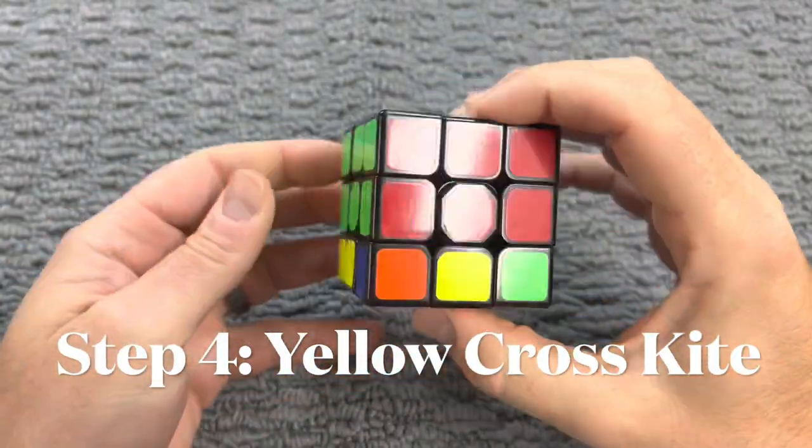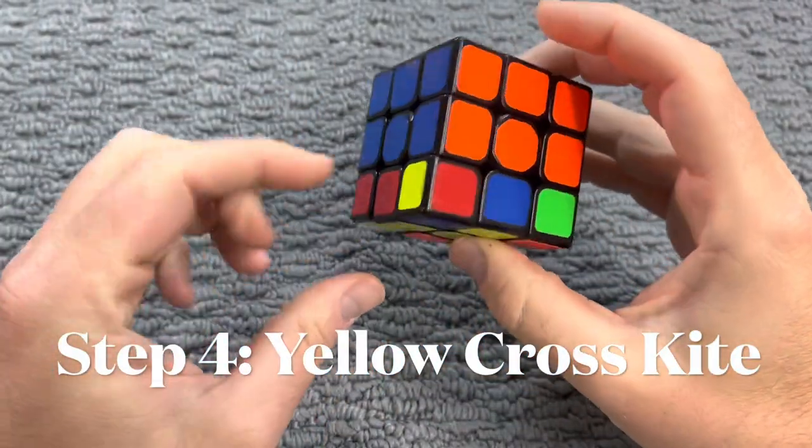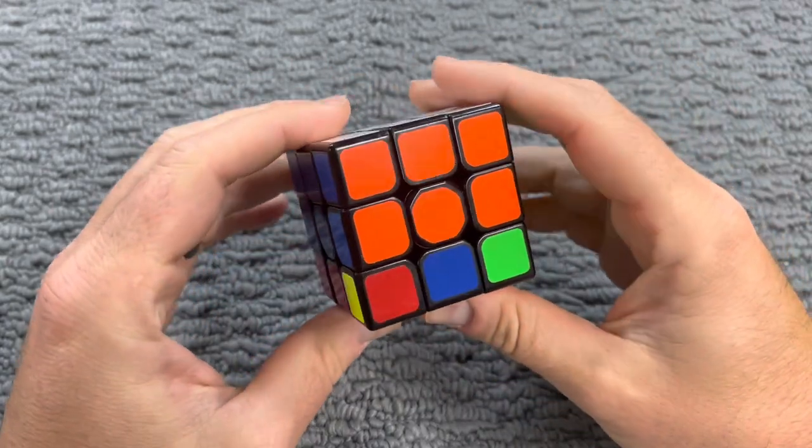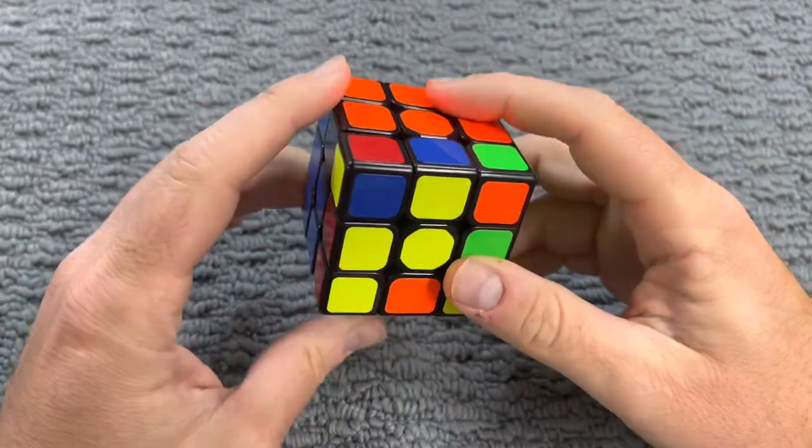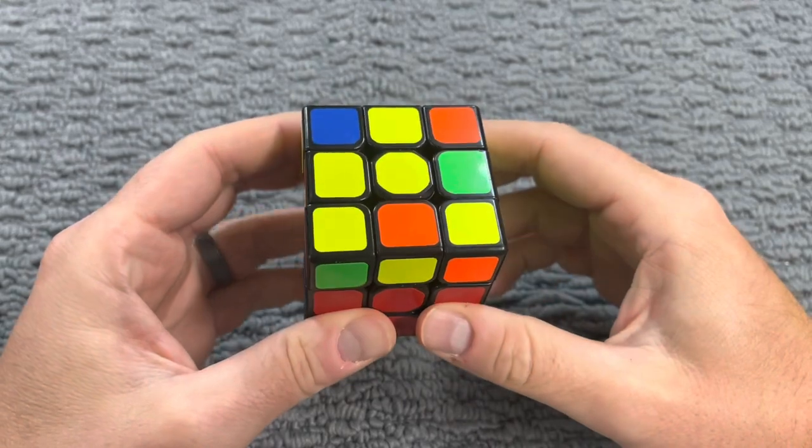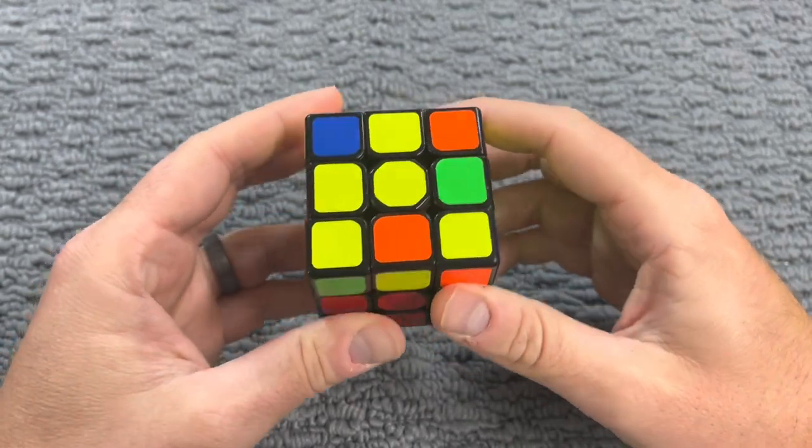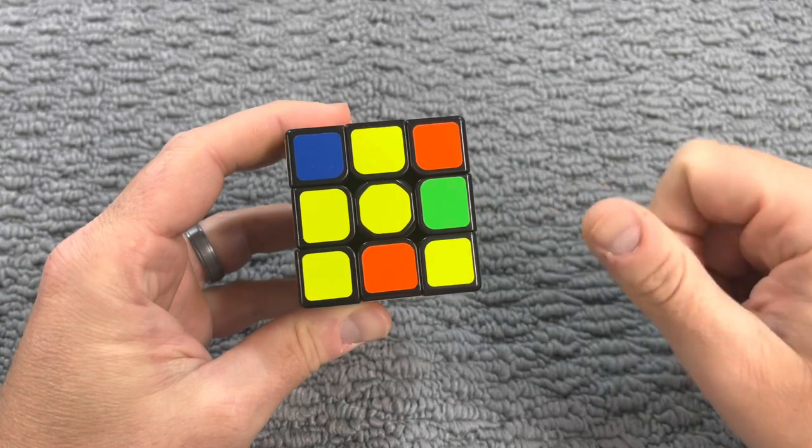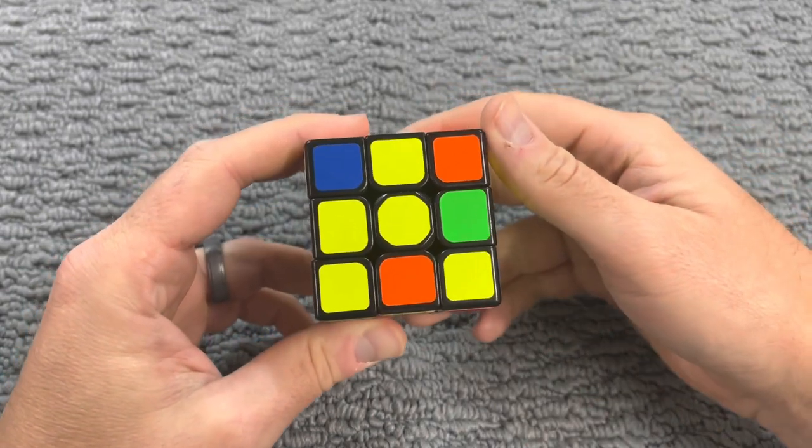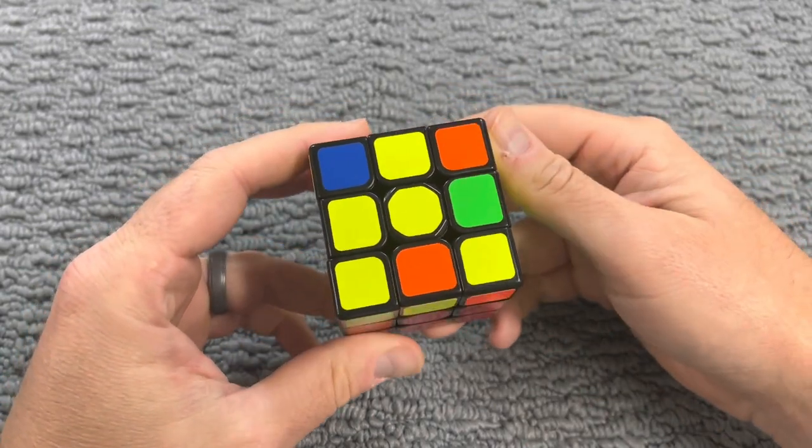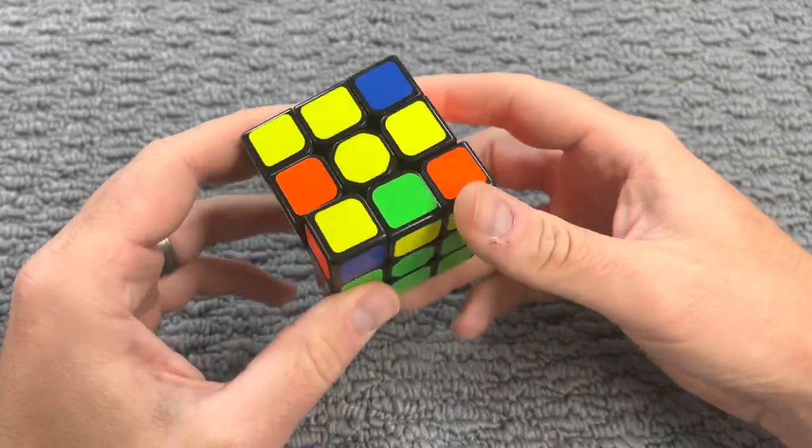Now that we've completed the top two rows, let's take care of the bottom row. This is step four. We're going to flip the cube upside down, and our goal is to create a yellow cross on the bottom, similar to what we did with the white, but with a different procedure and different algorithms.